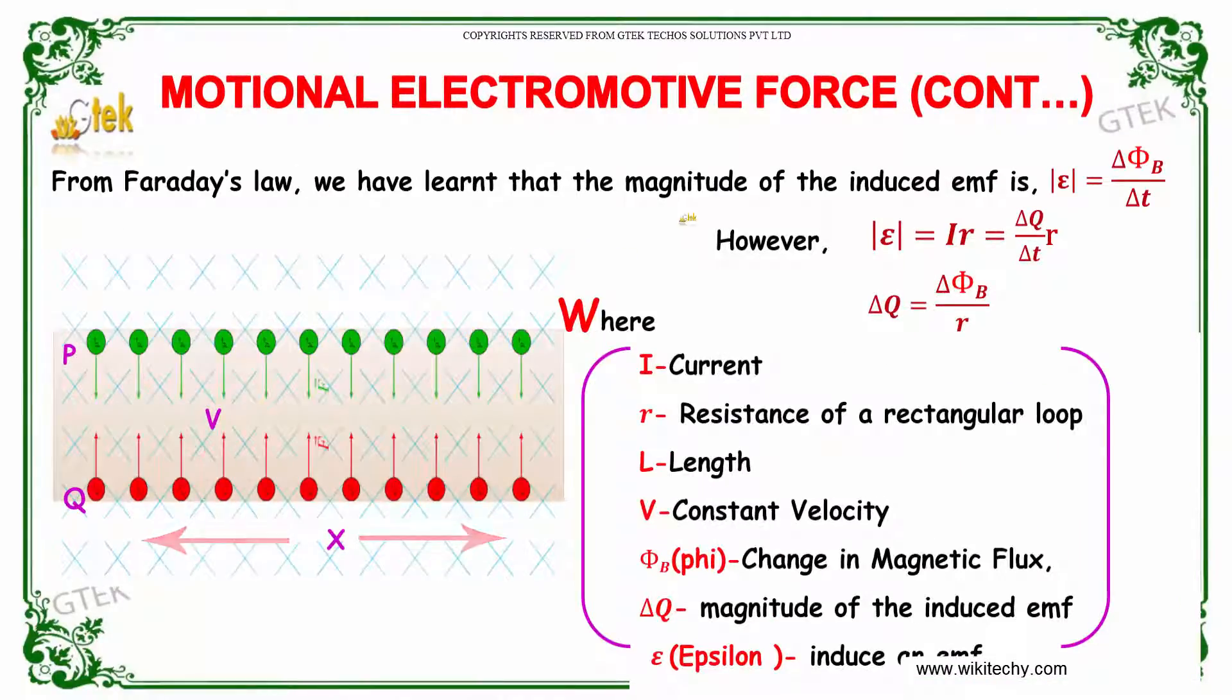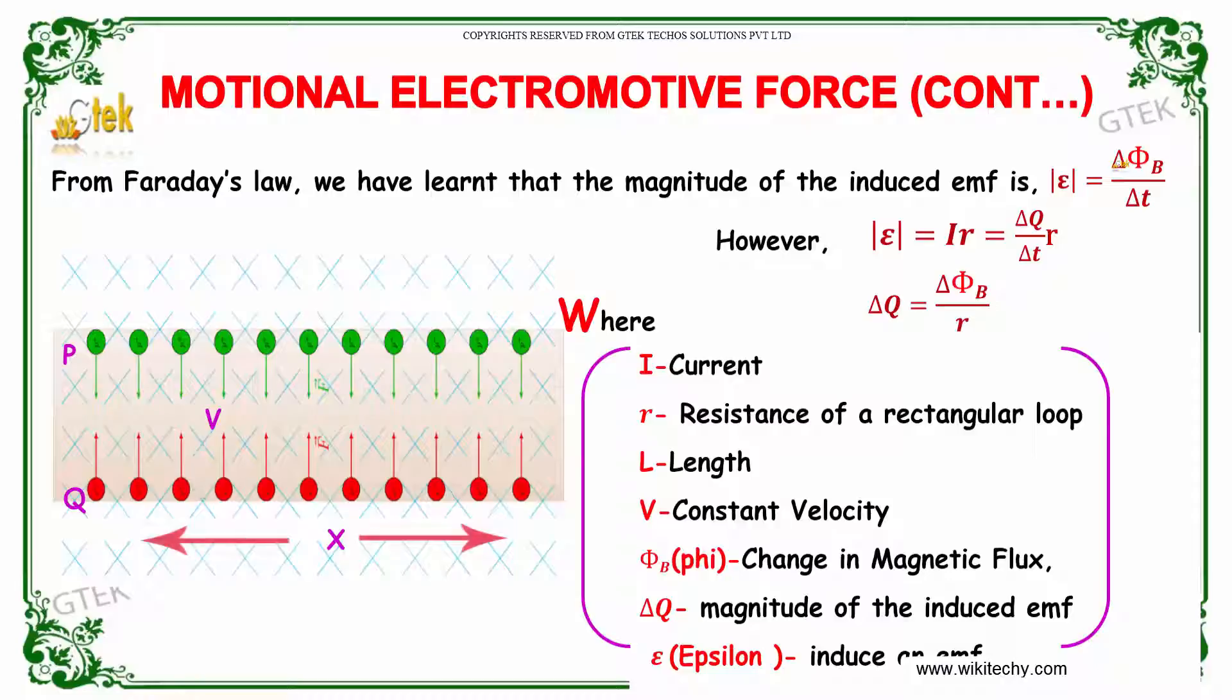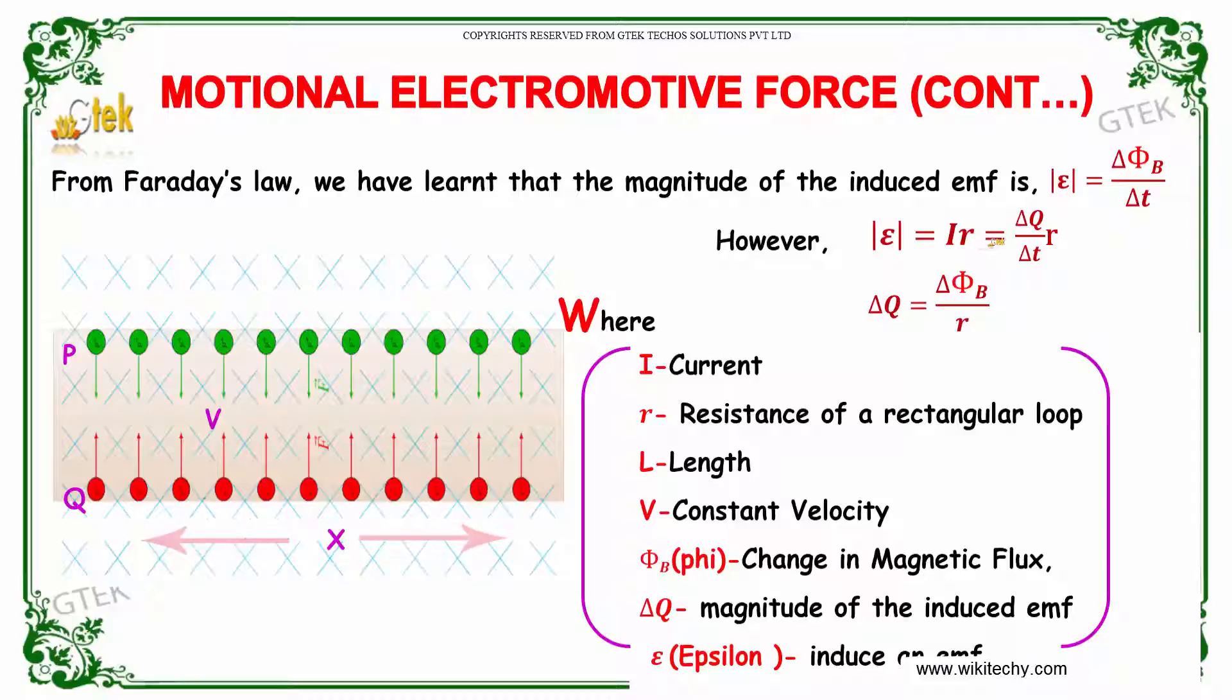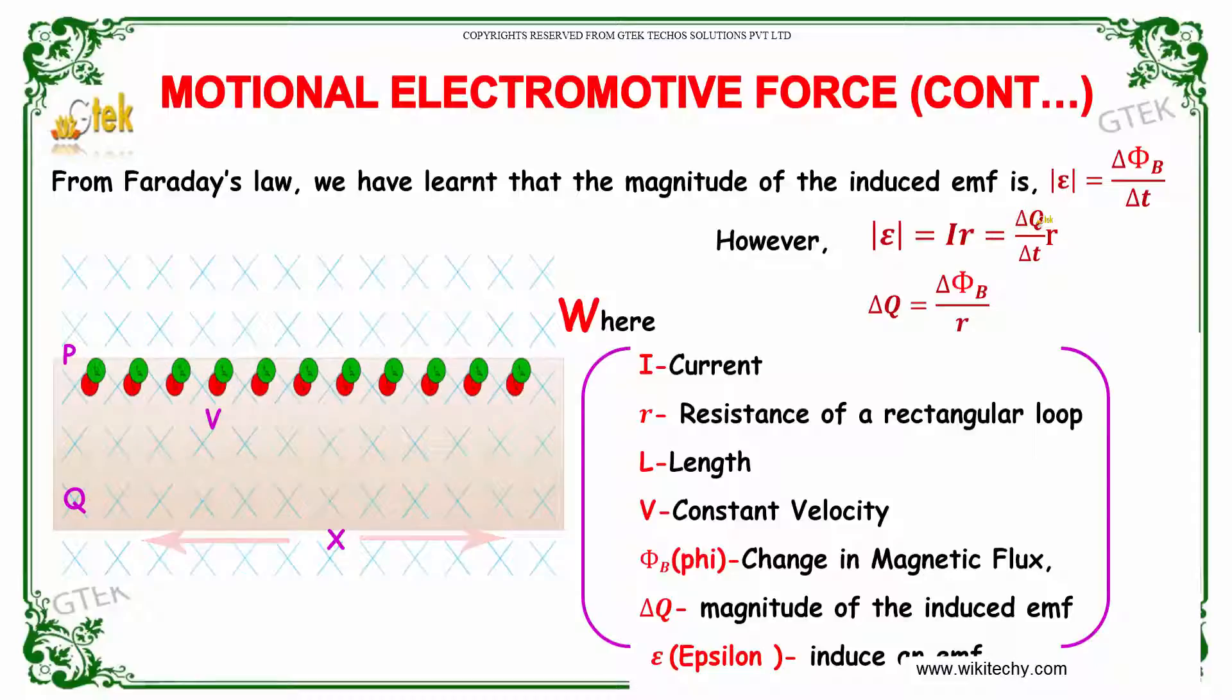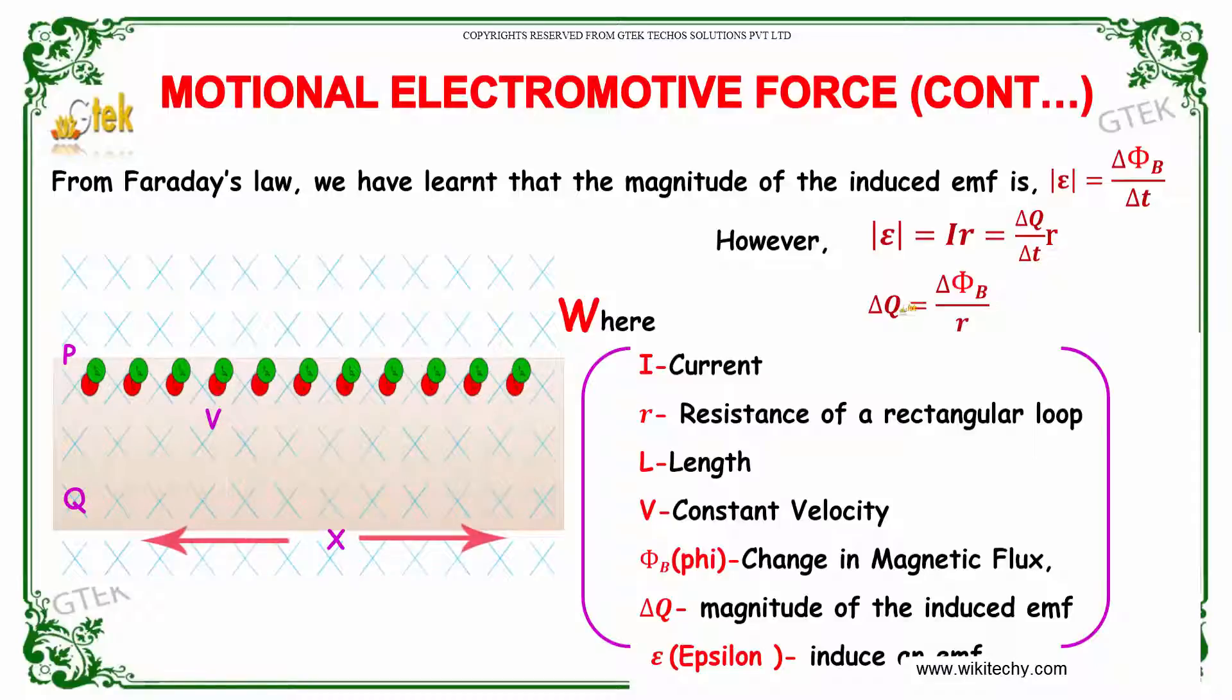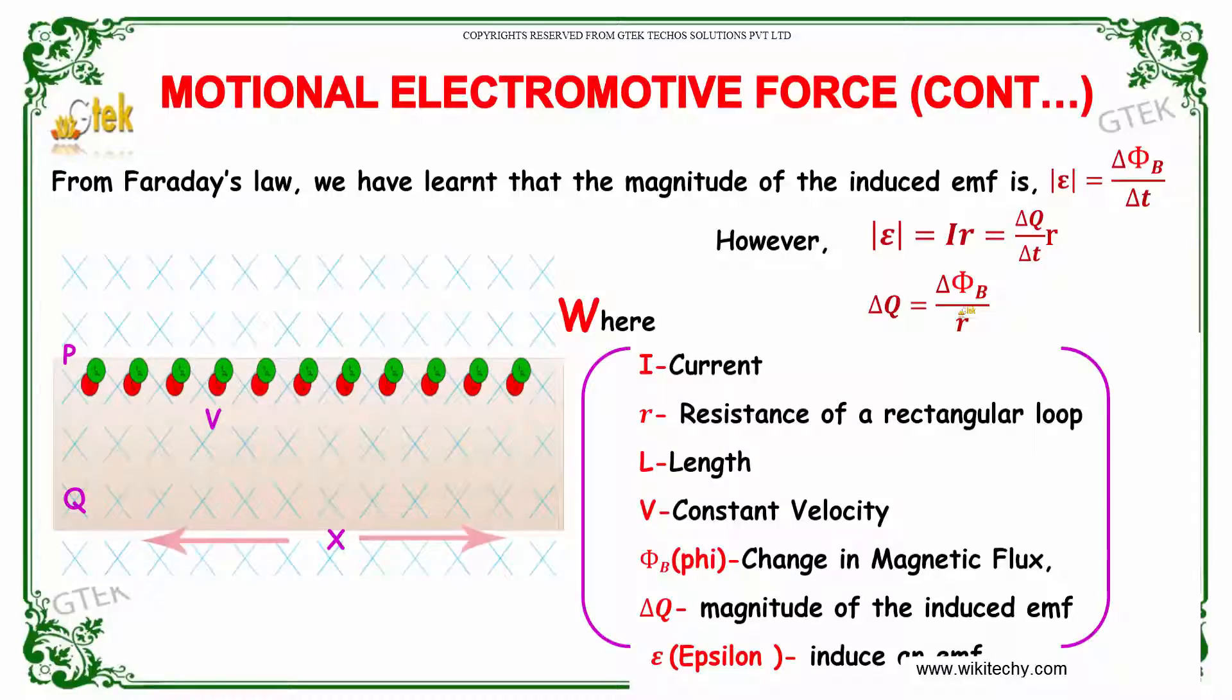From Faraday's law we have learned that the magnitude of the induced EMF epsilon equals delta phi B divided by delta T. Where epsilon is I into R, so delta Q by delta T into R, where delta Q equals delta phi B divided by R.